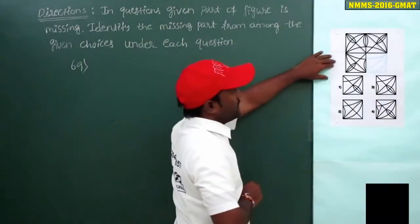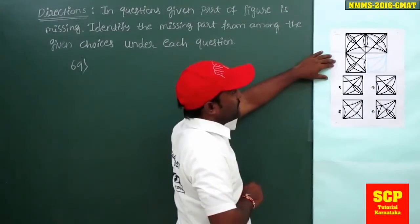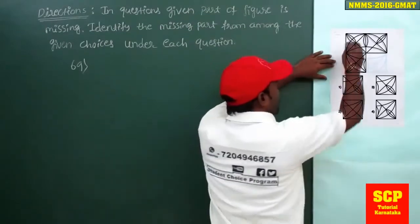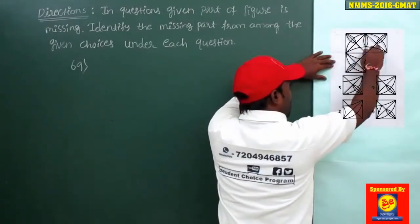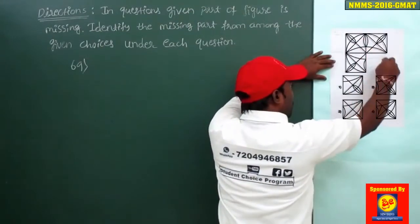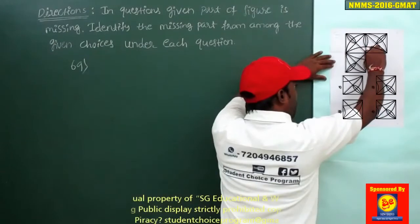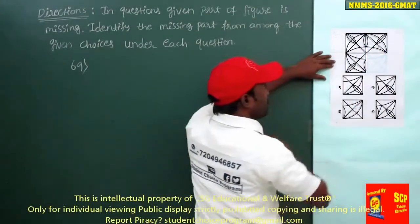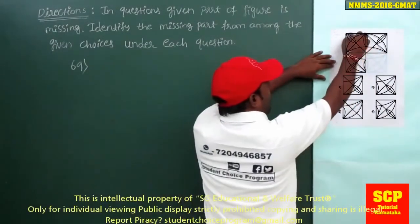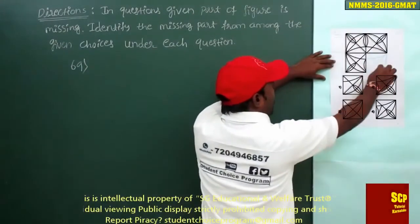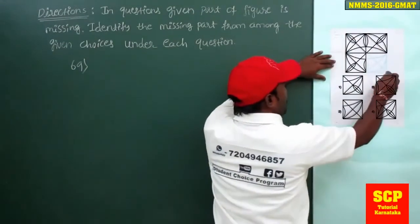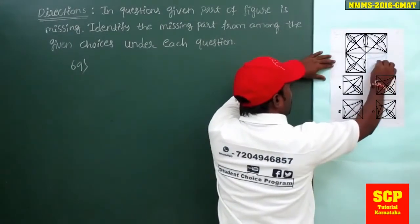Next, is there anything that is left out? Yes, one line has to be drawn like this — from this point to here. Next, you have to draw this type of shape here, from this point to this.